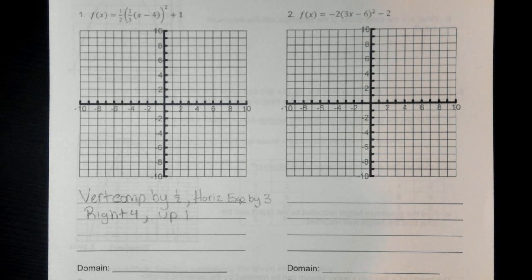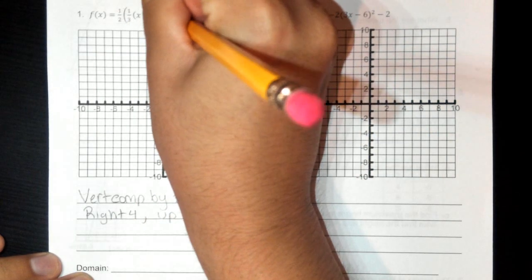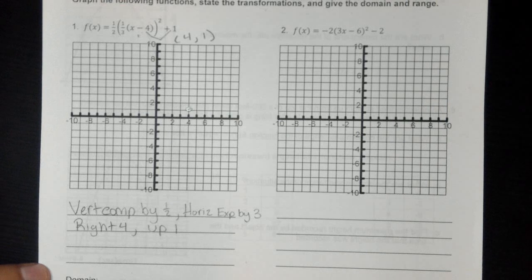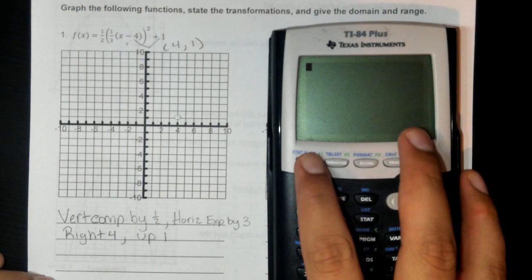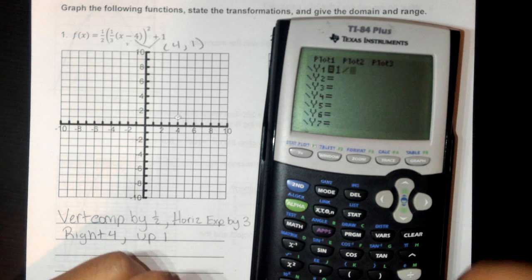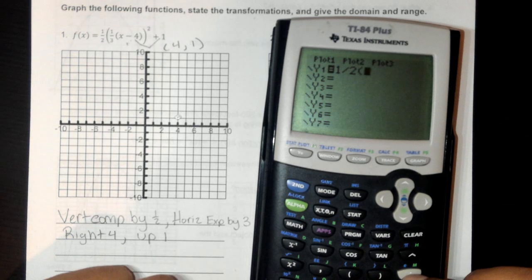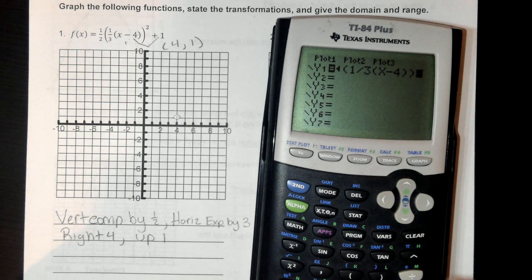Now that we've stated the transformations, let's look at the graph. The h and k tell me that the vertex is going to be at (4, 1). It's going to be a parabola that opens upward since we have a positive a value. Let's plug this into the calculator — we got one-half times parentheses one-third times (x minus 4) close parentheses squared.